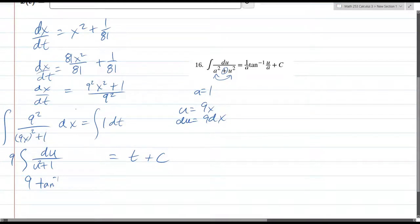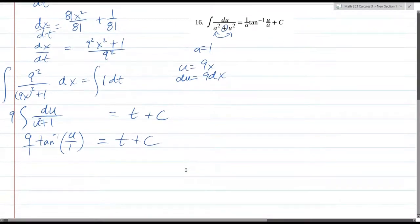We did have to make a u substitution, but at least the a is 1. So I'll copy this 9 down, I'll just write it as 9 over 1 tangent inverse u over 1. The plus constant I already accounted for on the right side. You only need to account for it on one of the two sides, not both. Unsubstitute back, so we have 9x. Tangent inverse of 9x over 9 equals t plus c.